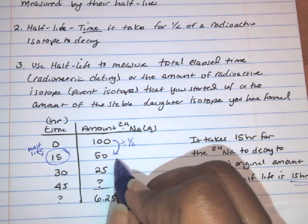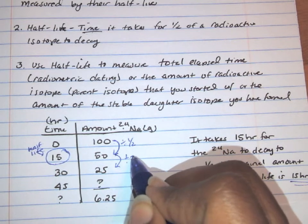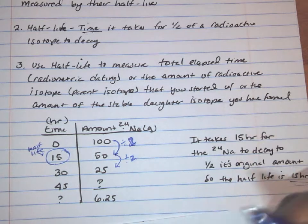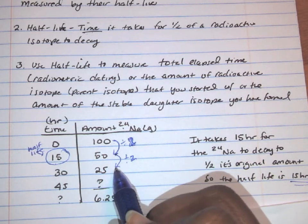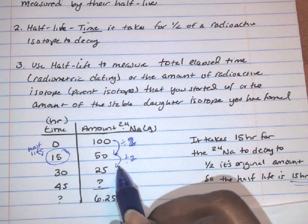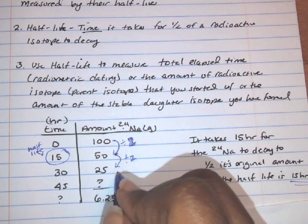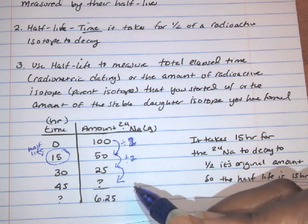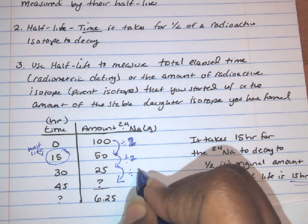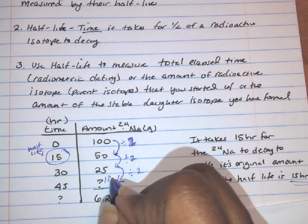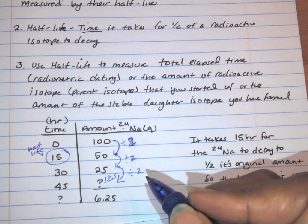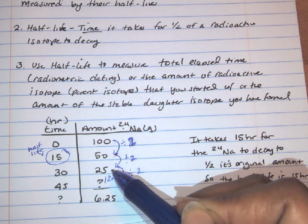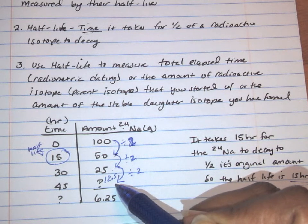When another 15 hours pass, bringing us to 30 hours, we divide by 2 again — so half of 50 is 25. In 15 more hours you go from 50 to 25, and then in another 15 hours you have half of 25, which is 12.5 grams of sodium left. So: 100 grams at 0 hours, 50 grams at 15 hours, 25 grams at 30 hours, and 12.5 grams at 45 hours.